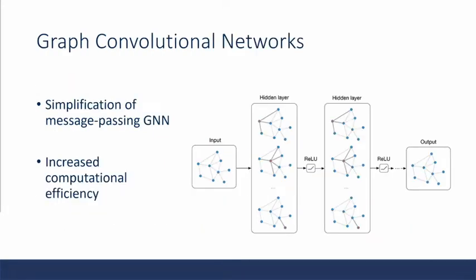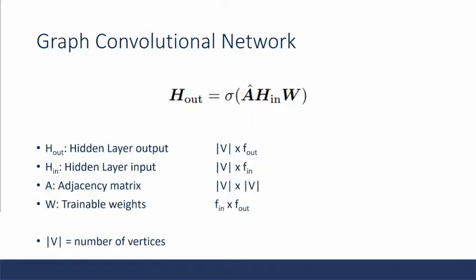Graph convolutional networks are simplification of message passing GNNs, and they increase computational efficiency by linearizing the operation. Here we have the output of a layer is the adjacency matrix multiplied by the input multiplied by the weight, wrapped around by a non-linearity. So you can see the operation here is just a straightforward set of multiplications, and we're able to get the output. This allows graph computation with graph structured data to be very efficient.